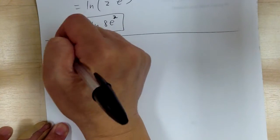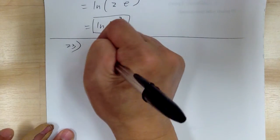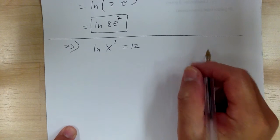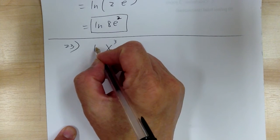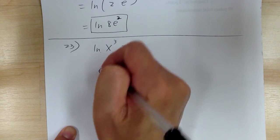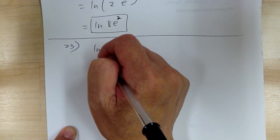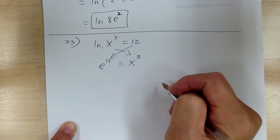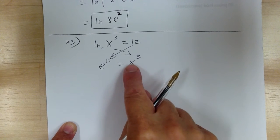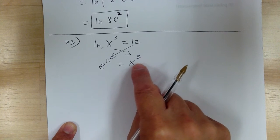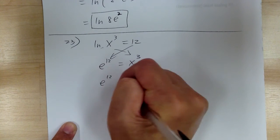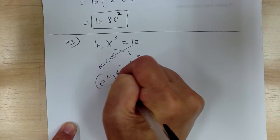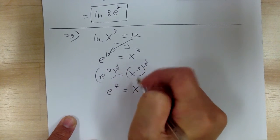Let's go to number 23. You have natural log of x to the 3 equals 12, and you want to solve. Change form — natural log means it's base e, so that's an invisible base e. When you change form, the base stays the same, so e over here and switch. It becomes e to the 12 equals x to the 3. To solve for x, raise everything to the 1 third power to get rid of the 3 — do the same on both sides. So you end up with e to the 4 equals x. That's your answer.